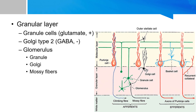The granule cells project from the granular cell layer through the Purkinje layer up to the molecular layer, forming the parallel fibers that contact the Purkinje cells. Golgi cells synapse in the glomerulus and extend to the molecular layer where they synapse with parallel fibers.